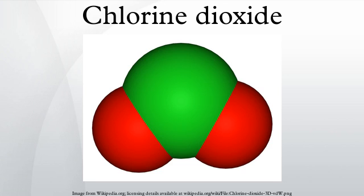It is produced with high efficiency by reducing sodium chlorate in a strong acid solution with a suitable reducing agent such as methanol, hydrogen peroxide, hydrochloric acid, or sulfur dioxide. Modern technologies are based on methanol or hydrogen peroxide, as these chemistries allow the best economy and do not co-produce elemental chlorine. The overall reaction can be written: chlorate plus acid plus reducing agent → chlorine dioxide plus byproducts.